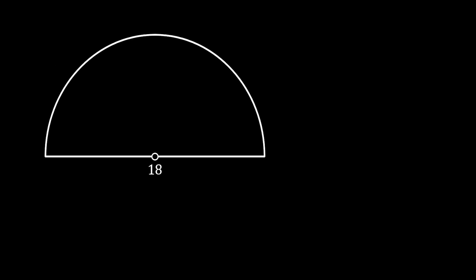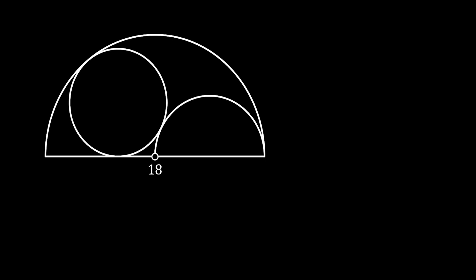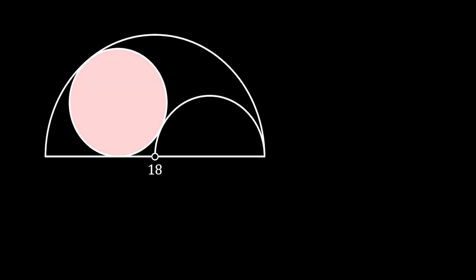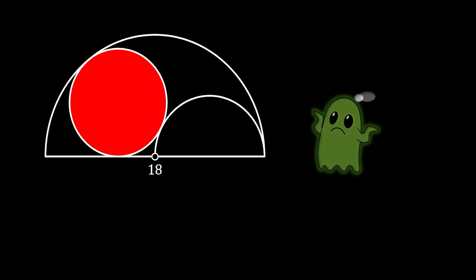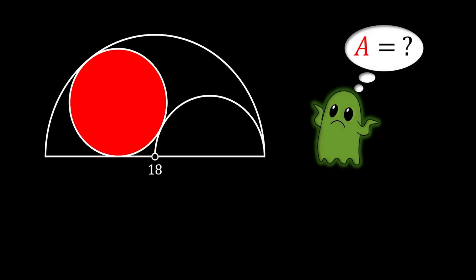We will start our problem with a half circle with a diameter of 18. Then we will use the right radius of this half circle to form another half circle inside it. We will inscribe a full circle in the remaining area as you can see on the sketch. The question is: can we somehow calculate the area of this red inscribed circle?